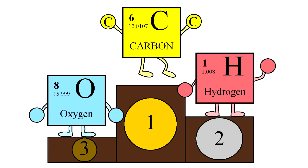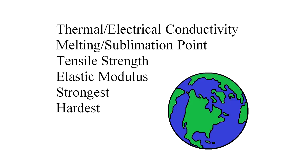These unique chemical properties translate into some really, really cool physical ones. When carbon is just bonded to itself, it is the Michael Phelps of chemistry, winning in just about every event it competes. It has the highest thermal conductivity, electrical conductivity, melting point, sublimation point, tensile strength, and elastic modulus. It is also the strongest and the hardest natural substance in the entire world.